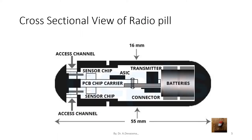Here is a cross-sectional view of the radio pill. The location of the sensor chip, PCB chip carrier, ASIC chip, transmitter, and connector are indicated in this cross-sectional view.